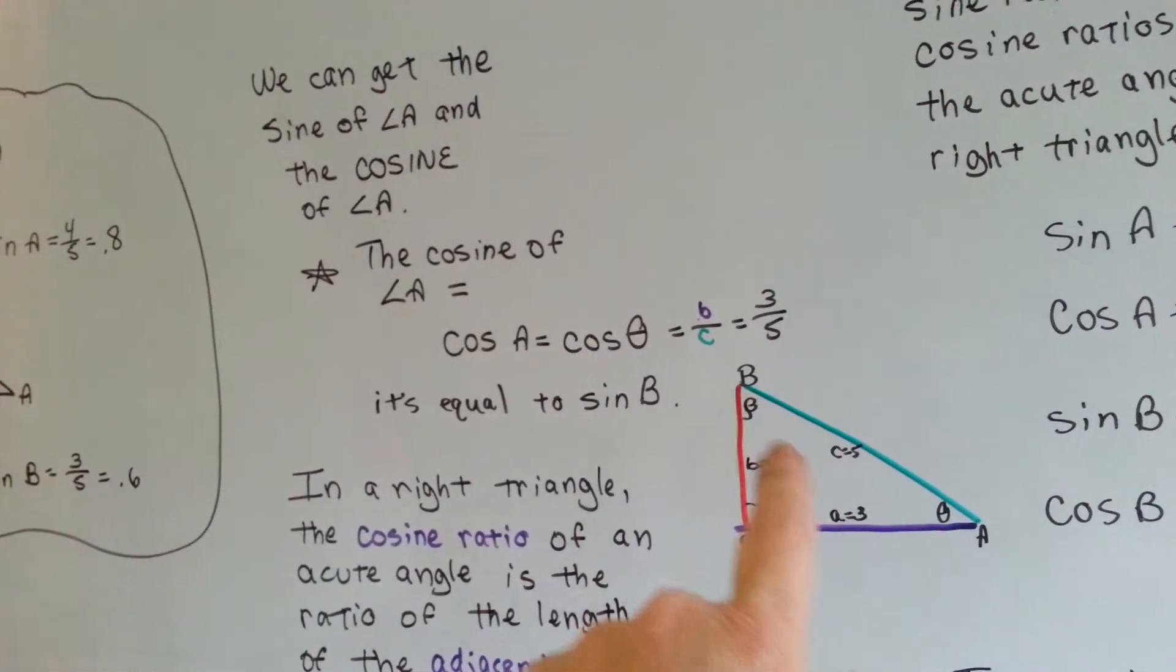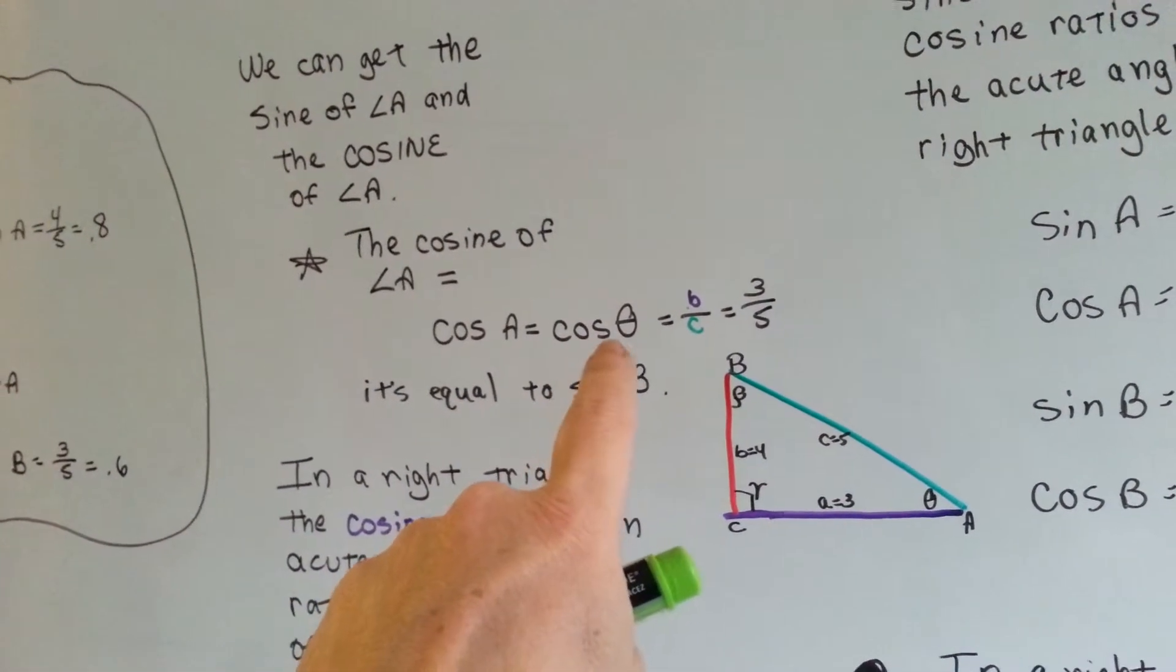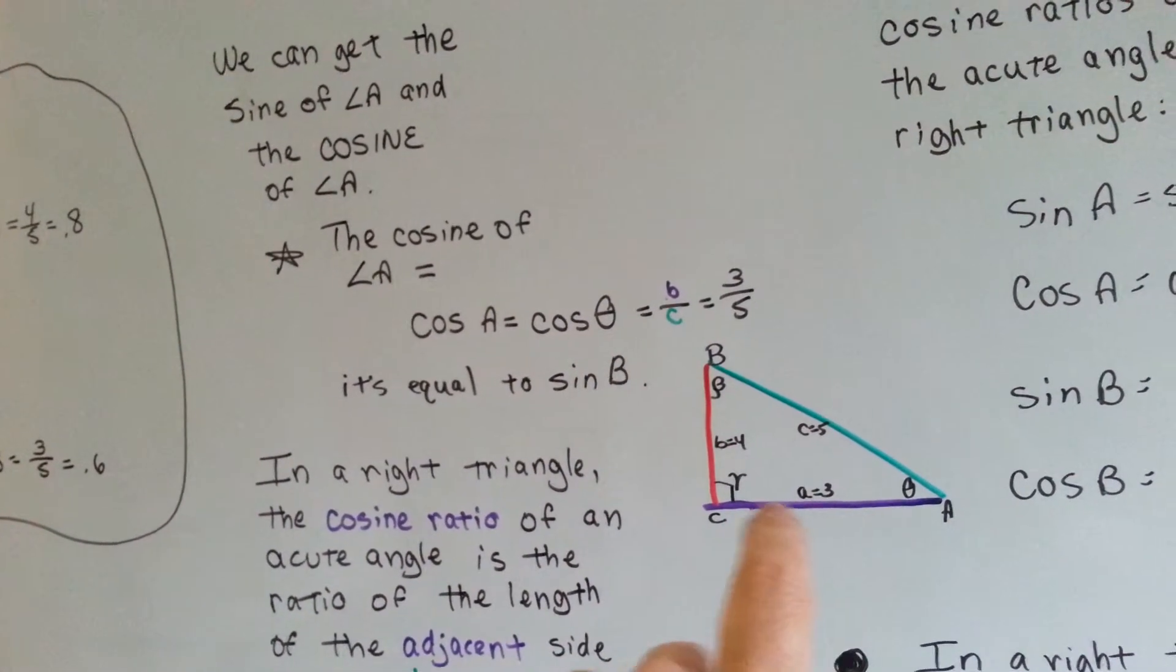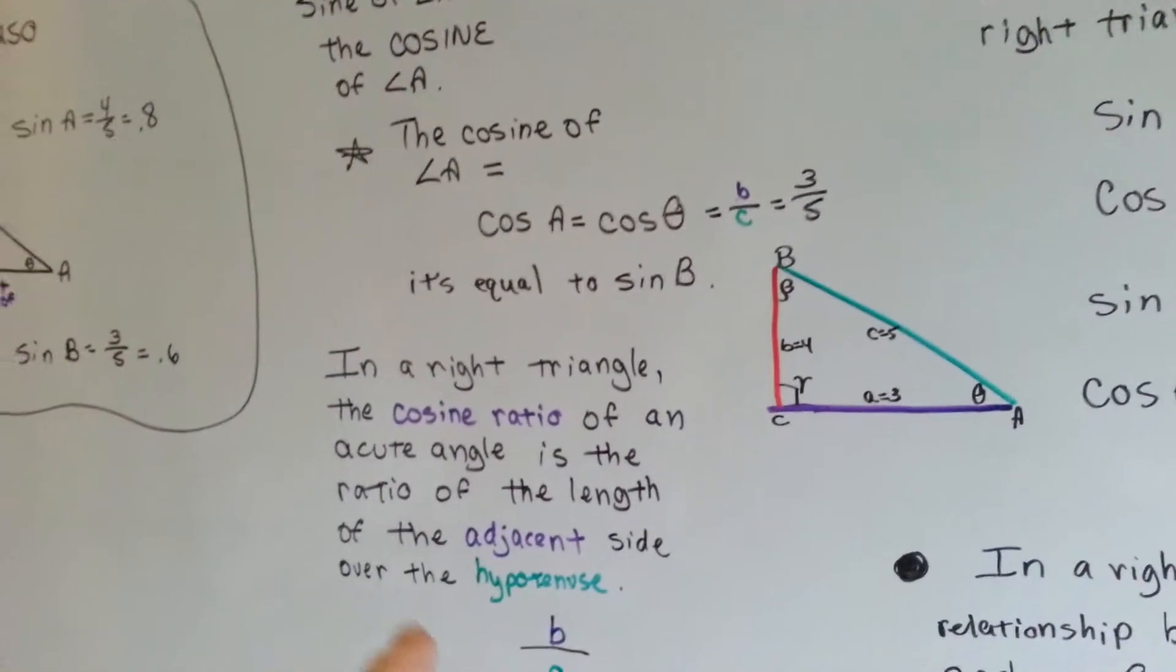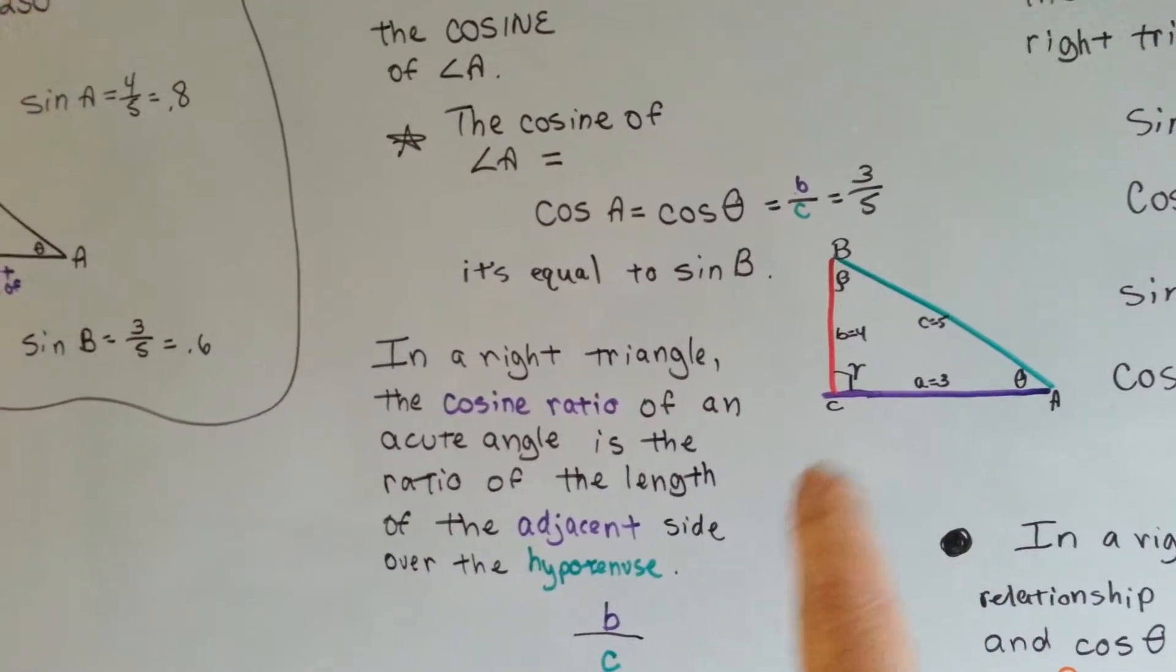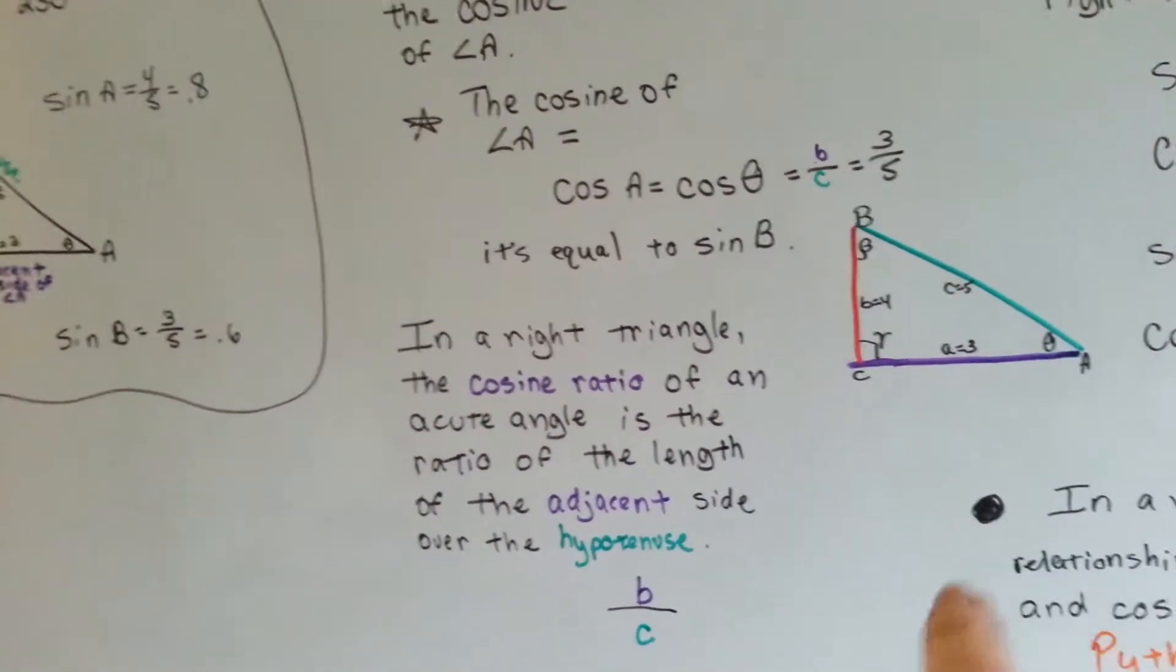Cosine A is, see the theta mark there? Here's beta, here's gamma. The cosine theta is equal to B over C. The adjacent one over the hypotenuse. In a right triangle, the cosine ratio of an acute angle is the ratio of the length of the adjacent side over the hypotenuse.